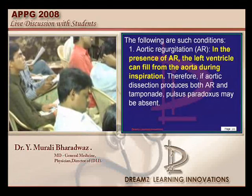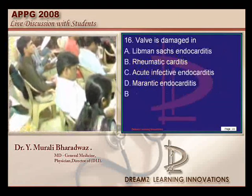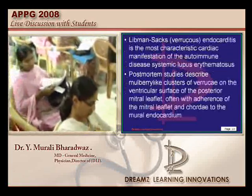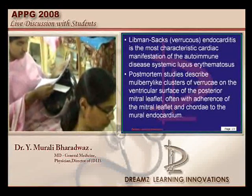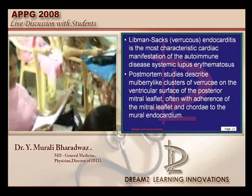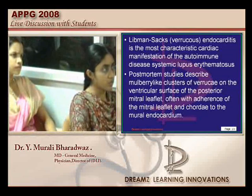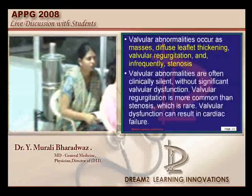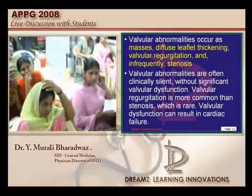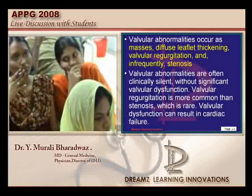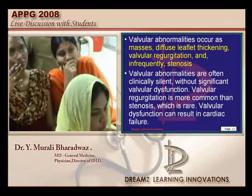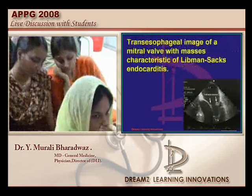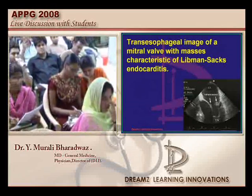Now, which valve condition damages the valve? How many answered rheumatic heart disease? In Libman-Sacks endocarditis — lupus erythematosus — there are vegetations on the valve. But how many cases of MS and AS in your clinical practice are due to SLE patients? Not many. And those who had infective endocarditis — how many end up with sequelae of AS or MS? Not many. So they affect the valves but do not destroy them, unlike rheumatic heart disease which is capable of destroying valves and leading to various valvular abnormalities. Transesophageal imaging can show vegetations in Libman-Sacks endocarditis.